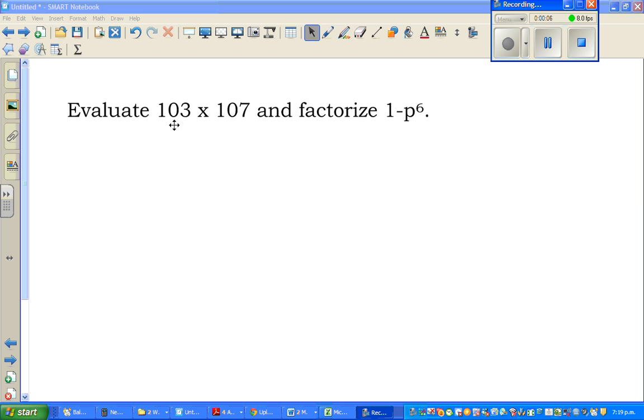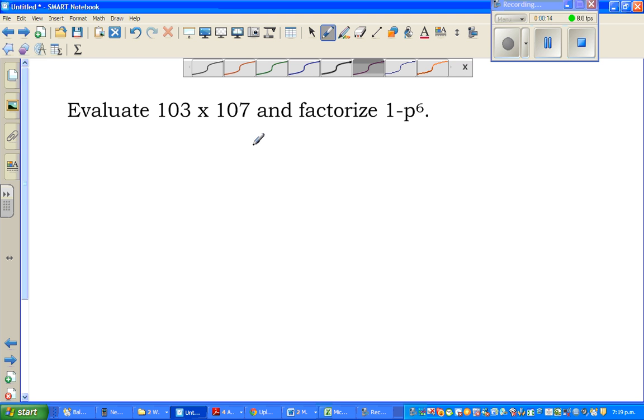Evaluate 103 times 107 and factorize 1 minus p to the power 6. Now here the question is, we want to use algebra to multiply 103 times 107.